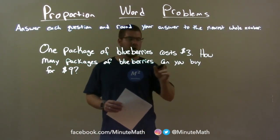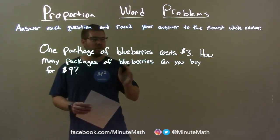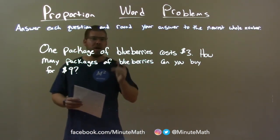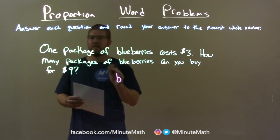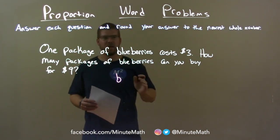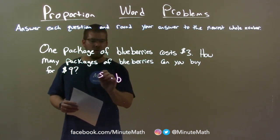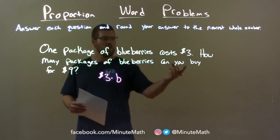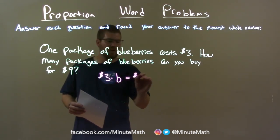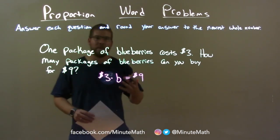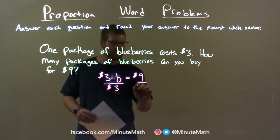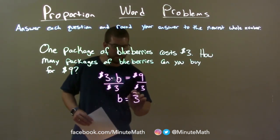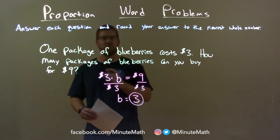One package of blueberries costs $3. How many packages of blueberries can you buy for $9? Let's let the letter B represent the number of packages of blueberries. They tell us that each one costs $3, so $3 times B represents the cost of buying a variable amount of blueberries. We set that equal to $9 and solve for B. Divide both sides by $3. B equals $9 divided by $3, which is 3. So our final answer is three packages of blueberries for $9.